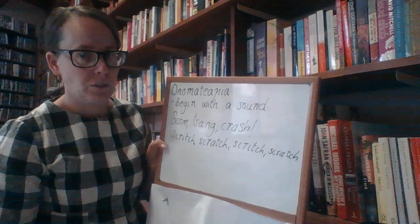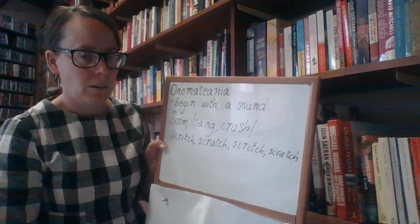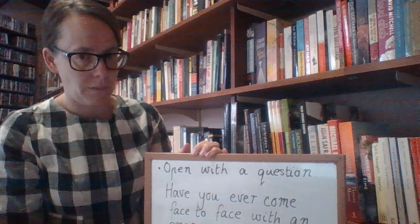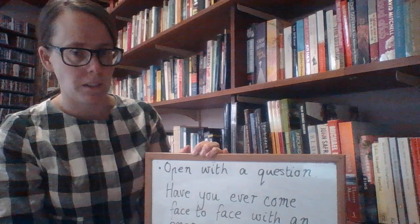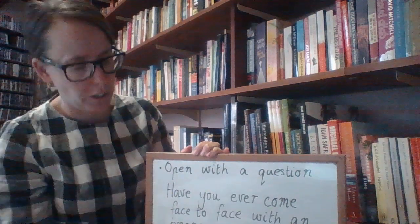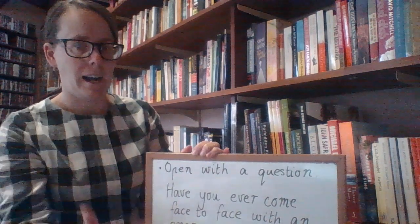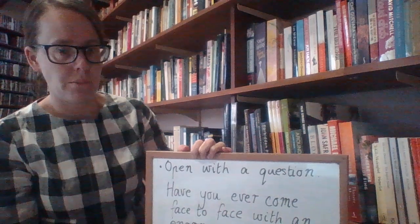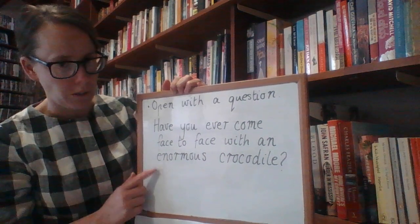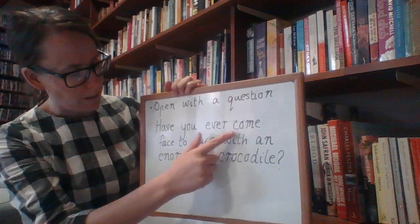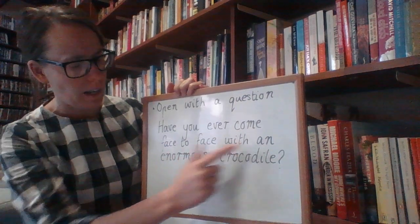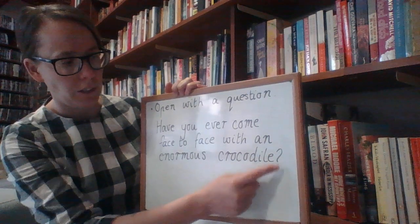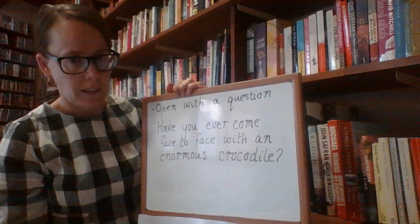So those are two examples of beginning your story with onomatopoeia, or beginning with a sound — great ways to open a story and make it really interesting. Our second example of how to write a great opening sentence is where we open with a question. We as the writer ask our audience a question, and that grabs their interest and draws them into our story. My first example is: Have you ever come face to face with an enormous crocodile? And because I'm asking a question, I've got a question mark at the end, not a full stop.